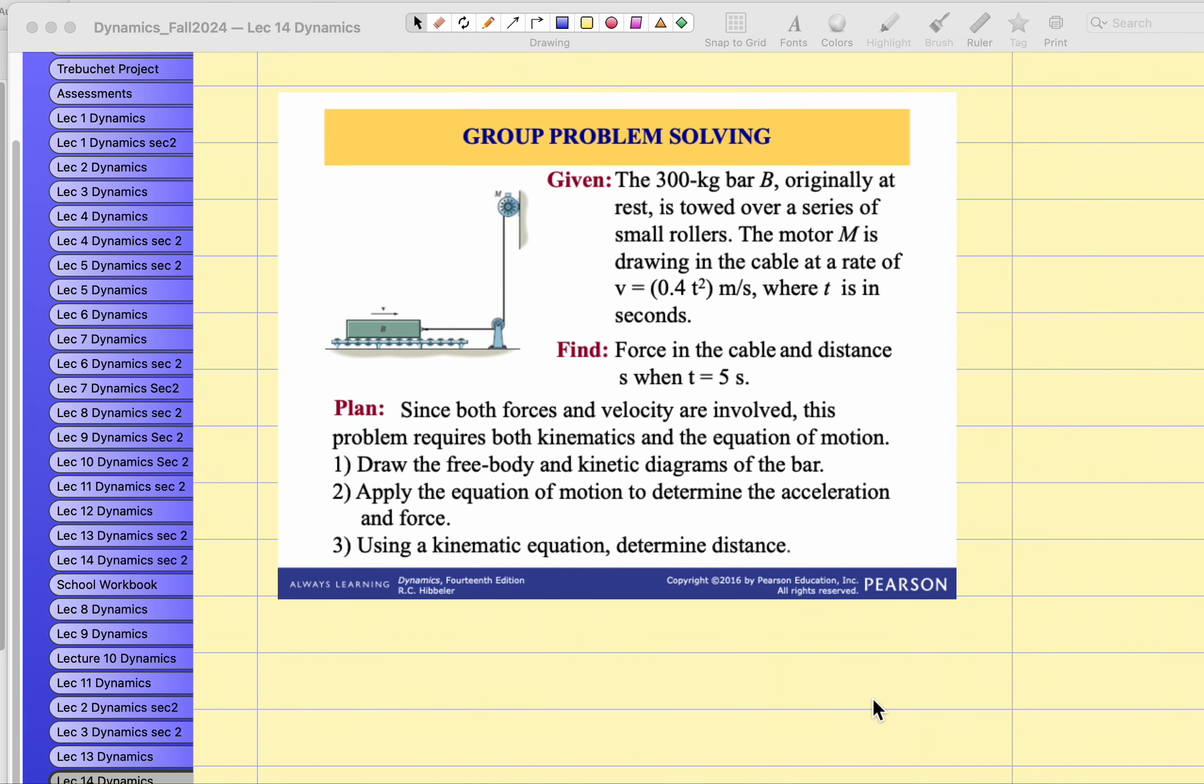A 300 kilogram bar B originally at rest, so initial velocity is zero, is stored over a series of small rollers. The motor M is drawing in the cable, so this is the motor pulling in the cable at a rate, velocity is 0.4t² meters per second.